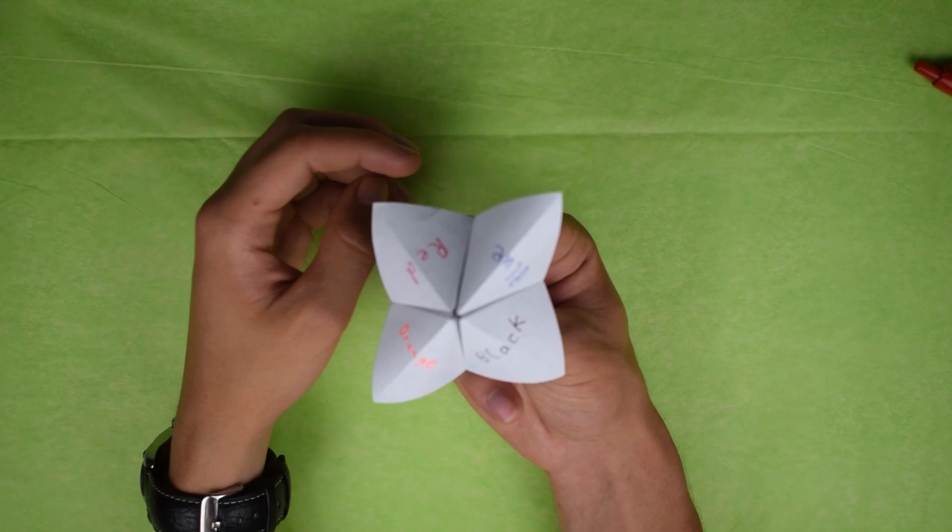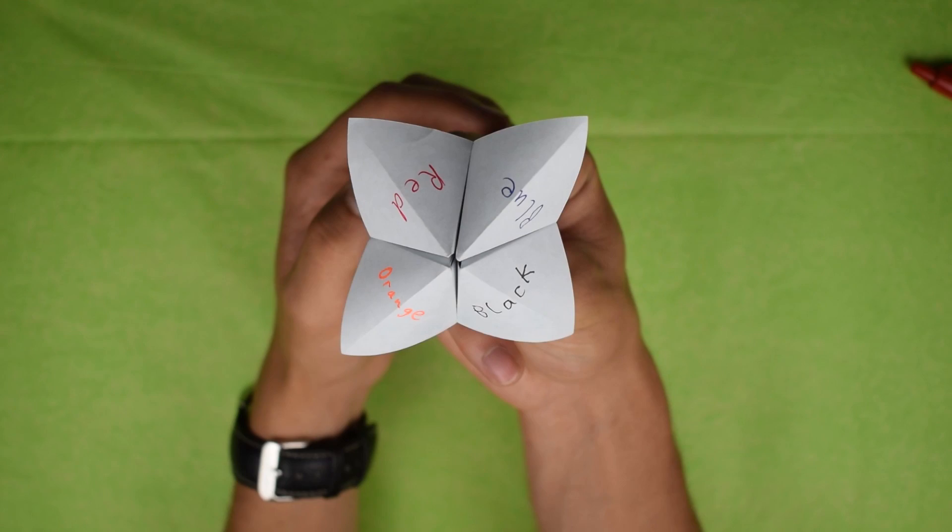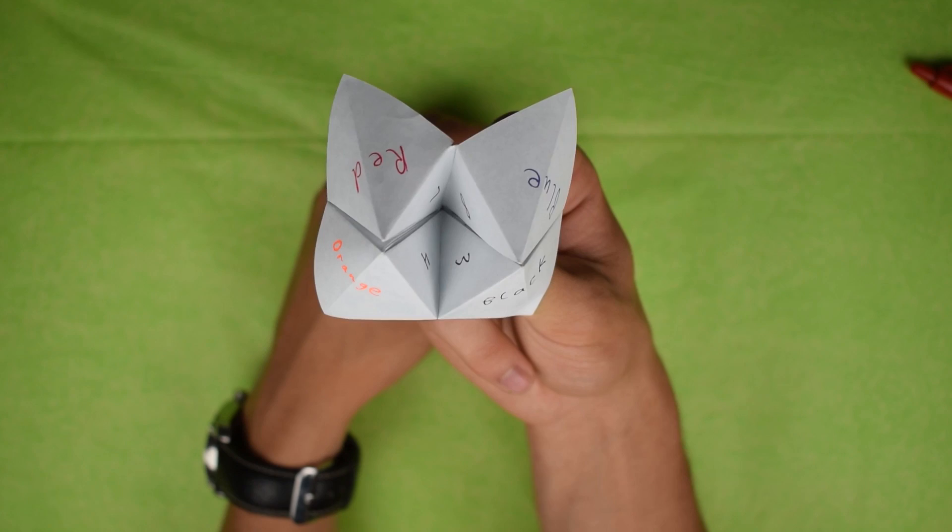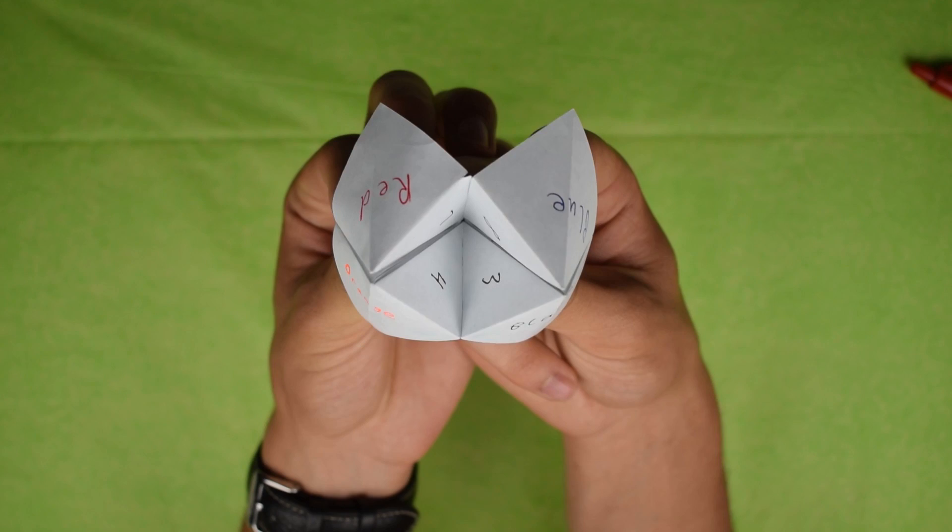So now I'll walk through with the finished fortune teller. So now that we have everything set up, I'm just going to give you an example of something you might do. You'd walk up to someone and say choose a color. And then they would choose for example blue. And you go B-L-U-E. And then you have the numbers three, four, seven, and eight. And someone let's say would choose seven.